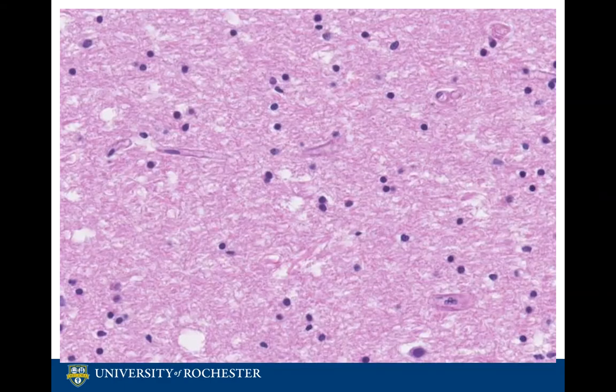Here we see the structure of the neuron, consisting of a cell body — also known as a perikaryon — an axon, and dendrites.